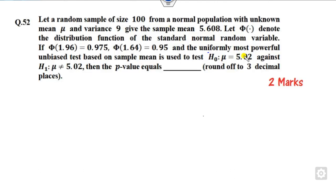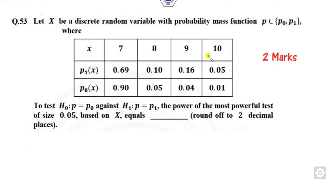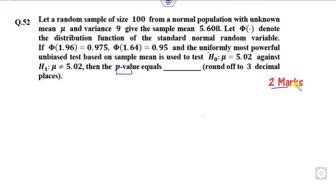So look at question number 52, which is related to two marks and you have to find the p-value of the problem. Question number 53 is again of two marks and you have to find the power of the most powerful test. How you can find these two questions in a very simple manner? Let's see.